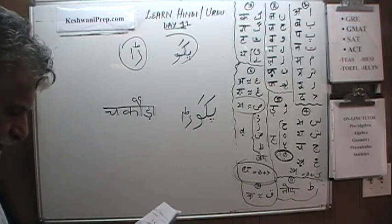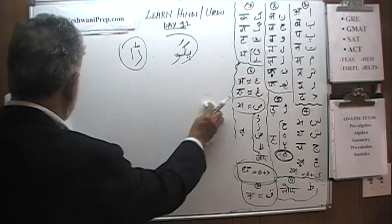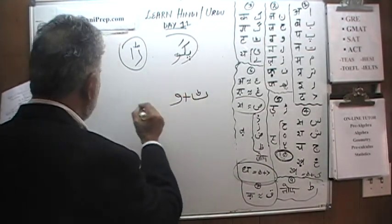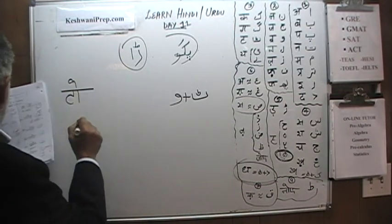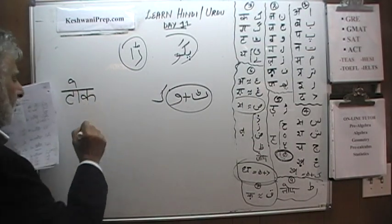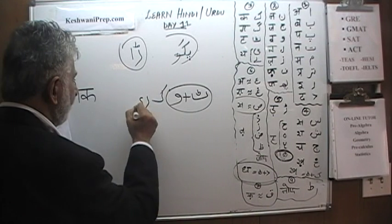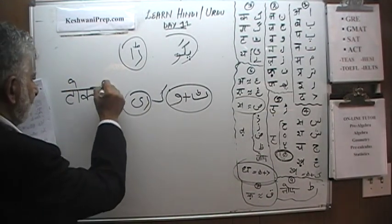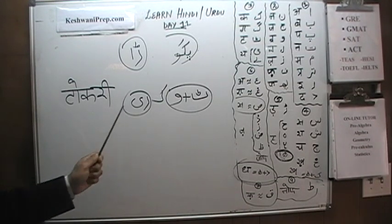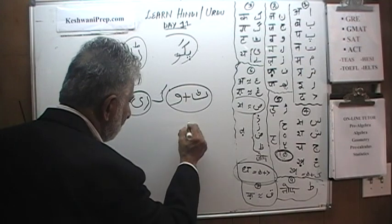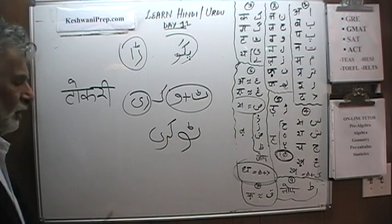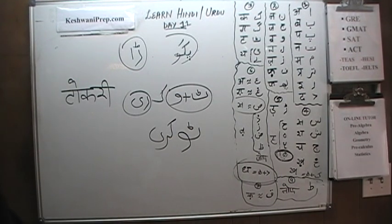Let's do another one — Chhoti Oki Matra. A Te and a Vav — To. Then Kaaf — Toka. Then Re — Tokri. Tokri, Tokri.